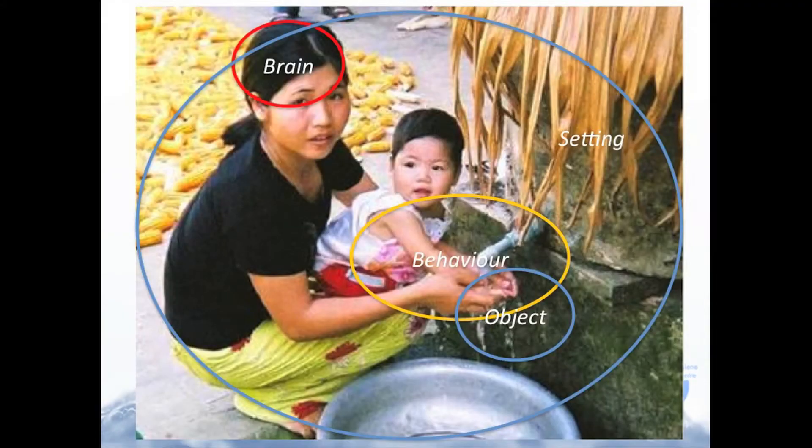We at the Hygiene Centre have been trying to understand hand-washing behaviour — what drives this behaviour. We've been working with colleagues in countries like India, China, Ghana, Kyrgyzstan, countries in Europe and Africa, trying to piece together a pattern of what's behind people's ability to wash hands with soap or their lack of it. What we've found is that behaviour is a complex interaction between a number of different factors. If you look at a picture of a mum in Vietnam helping her child wash her hands with soap, you can see the things that interact in her hand-washing behaviour.